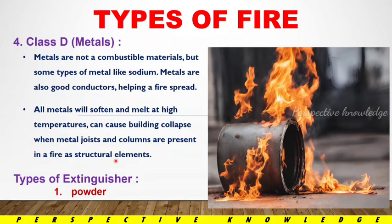Class D metal fires occur at very high boiling and melting temperatures, such as in metal molding and casting operations. Metal requires very high temperatures and will ignite only at a particular temperature. For Class D fire, a dry powder-type extinguisher is used to control the fire.